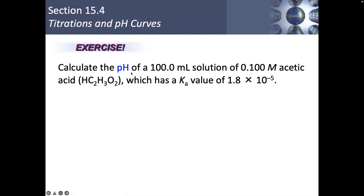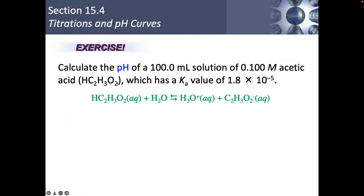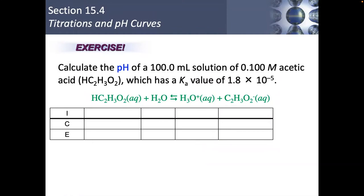Let's do another one. Calculate the pH of 100 mL of a 0.100 molar acetic acid solution with Ka = 1.8 × 10⁻⁵. Notice it doesn't say I'm mixing acetic acid with anything. So I'm probably at the start of my titration, before I've added any titrant. If it were saying I'm adding NaOH or HCl, that would be the buffer zone, as long as I haven't reached the equivalence point yet.